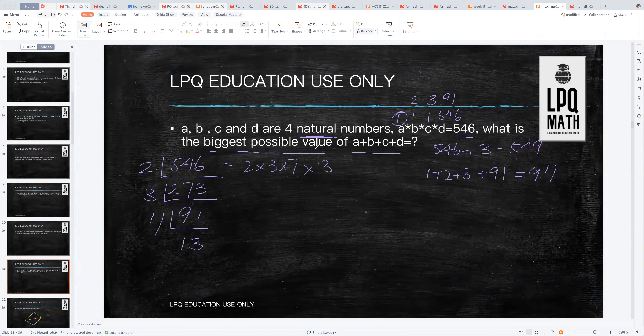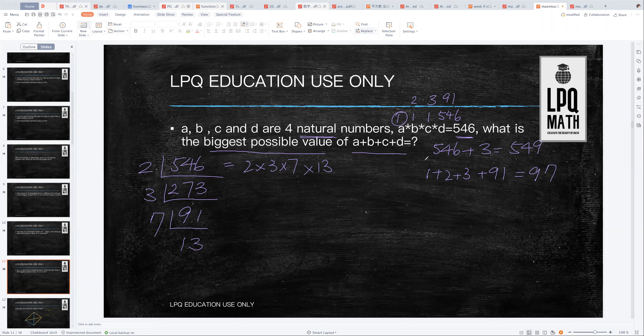How about we find out what is the minimum value of A plus B plus C plus D? In order to make the difference the smaller the better, one of them must be equals to each other. So it's 2 plus 3 plus 7 plus 13. The answer is 25.